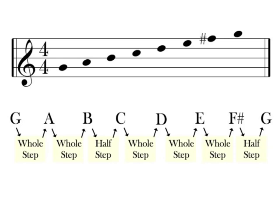As you can see, the only accidental used in the construction of a G major scale is F sharp.